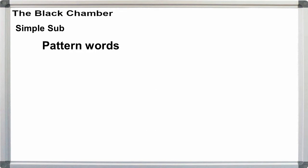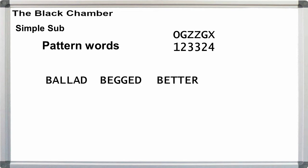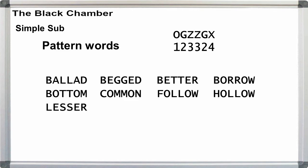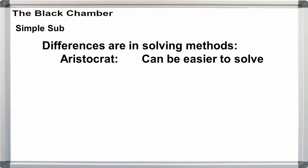That is, O-G-Z-Z-G-X has a 1-2-3-3-2-4 pattern, which can represent the words ballad, begged, better, borrow, bottom, common, follow, hollow, lesser, letter, sorrow, teller, or a number of other words. This makes aristocrats relatively easier to solve than PATs.